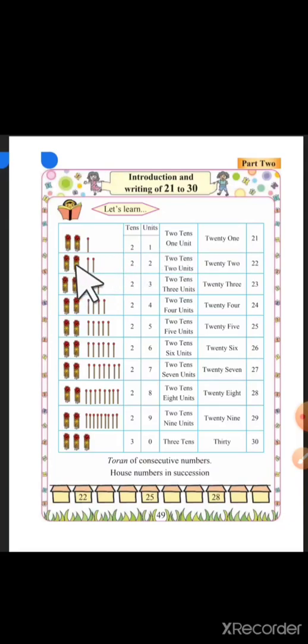2 tens makes 20 and 2 units is equal to 22. 2 tens makes 20 and 3 units is equal to 23. 2 tens makes 20 and 4 units is equal to 24.